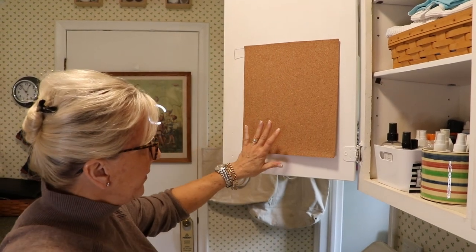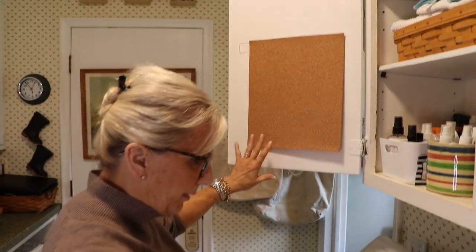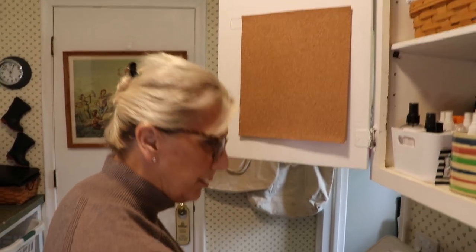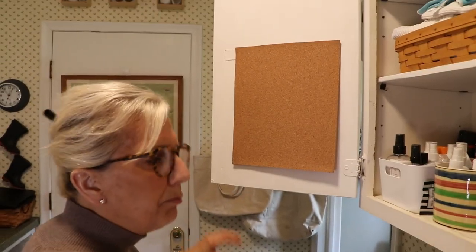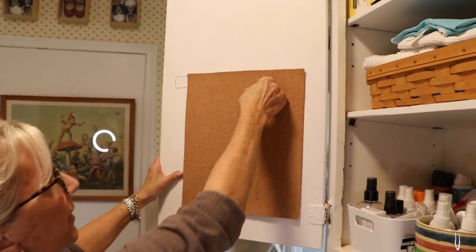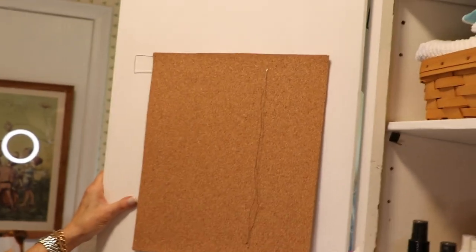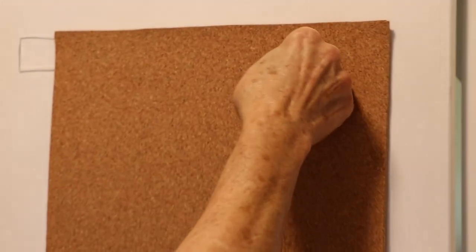So on this cork board, this piece of cork, I put... First, I threaded a bunch of needles. I think I did three black, three tan, and three white.